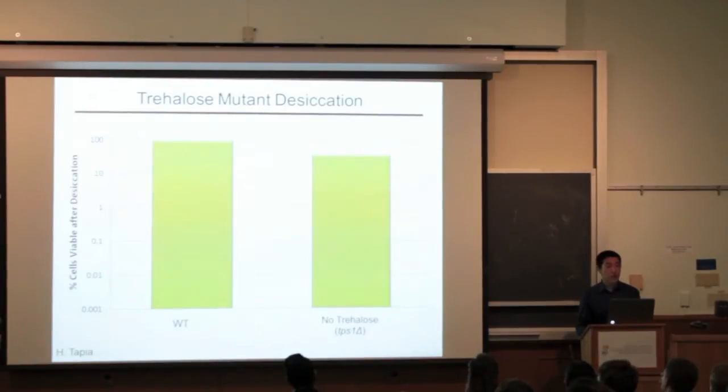We suspect that trehalose's function in desiccation tolerance may have been obscured by other molecules that yeast has to facilitate tolerance.